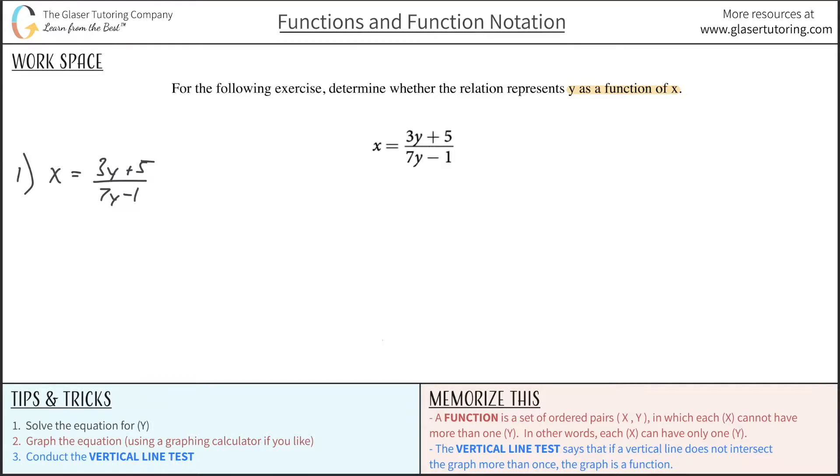The first thing I'd like to do is basically a cross multiplication. We can also look at this as taking this side and multiplying it by 7y minus 1. If I multiply the right hand side by that, I also have to multiply the left hand side by the same value. So this will become 7y minus 1 times x is equal to, remember this x is over 1, so when I cross multiply these two, I just get this value by itself. So this is going to be 3y plus 5.